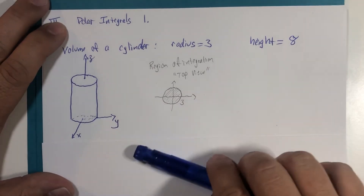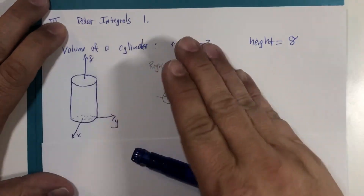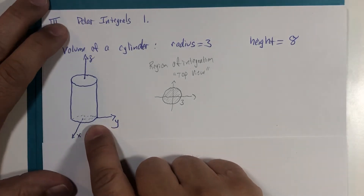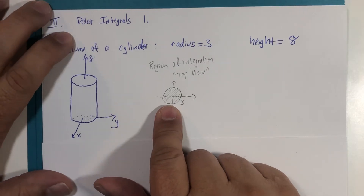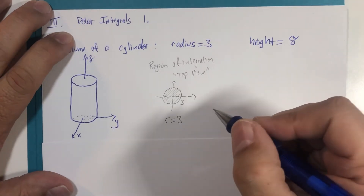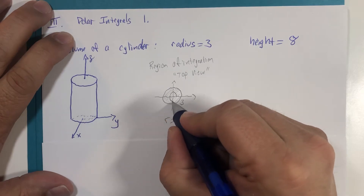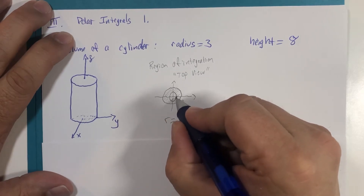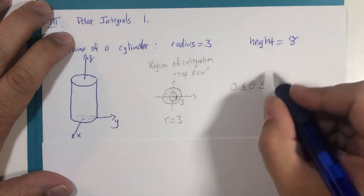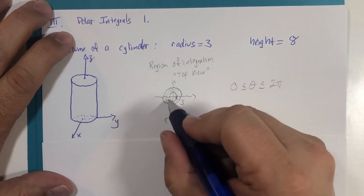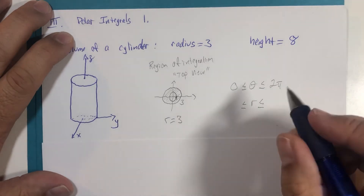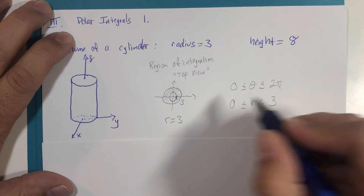The top of the cylinder is 8 units over the paper. The circle itself has an XY equation, but we're going to look at its polar equation. Its polar equation is r equals 3. In order to trace all the way around the circle once, the theta values vary from 0 to 2π. That takes us all the way around the circle one time, and the foundation lies entirely inside the circle of radius 3, starting from a radius of 0.